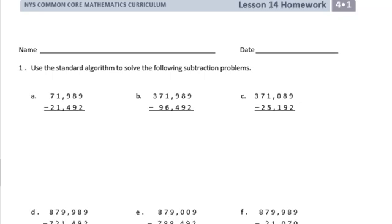We have 71,989 minus 21,492. We start all the way at the far right: 9 minus 2 is 7. 8 minus 9 we can't do, so we're going to borrow from the 9. That becomes an 8, this is 18. 18 minus 9 is 9. 8 minus 4 is 4. 1 minus 1 is 0. 7 minus 2 is 5. We get 50,497.